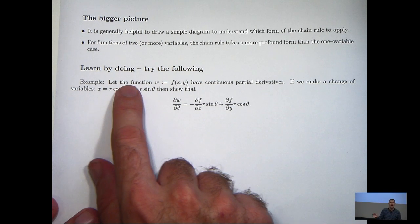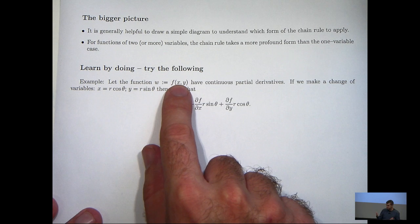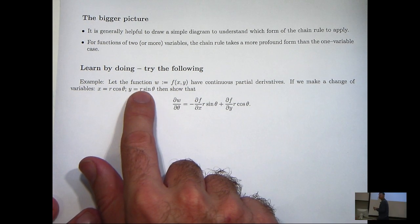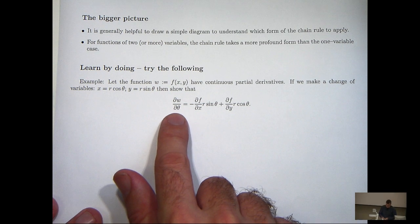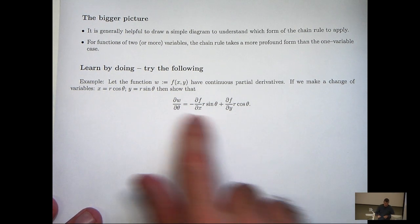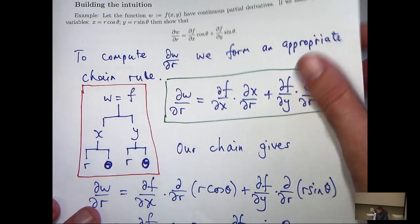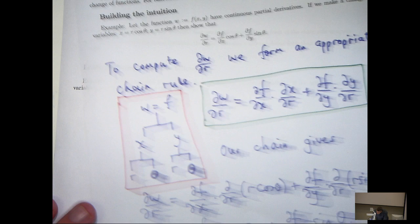So I've provided you with an example, very similar to the one I just solved. Consider the following function. If we make a change of variable, x equals r cos theta, y equals r sin theta, show that dw/d theta satisfies this. So you have to go through and formulate the chain rule for dw/d theta.